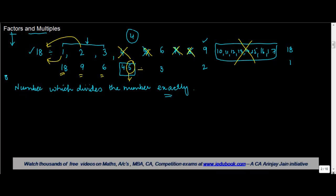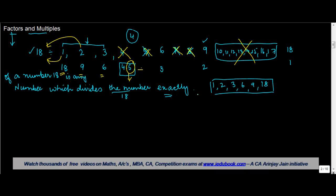So, a factor of a number — in our case 18 — is any number which divides that number exactly. In this case, 1, 2, 3, 6, 9, and 18 all divide 18 exactly. We say all these are factors of 18. So these numbers are basically the factors of 18.